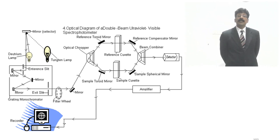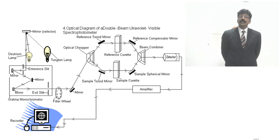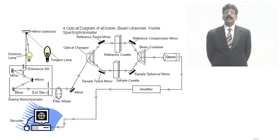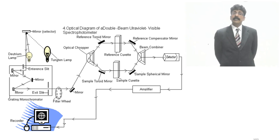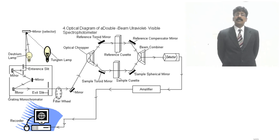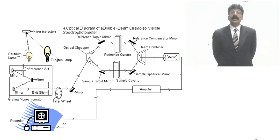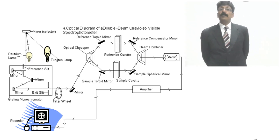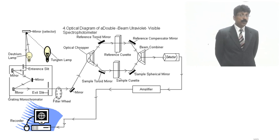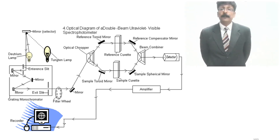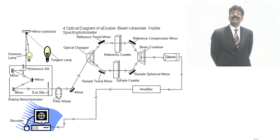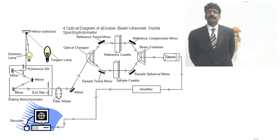After monochromatic light selection using the grating, the beam enters the sample cell — usually 1 centimeter path length. Both sample and reference beams reach the detector, which is usually a photomultiplier tube. Amplification and computerized processing then determine the concentration.